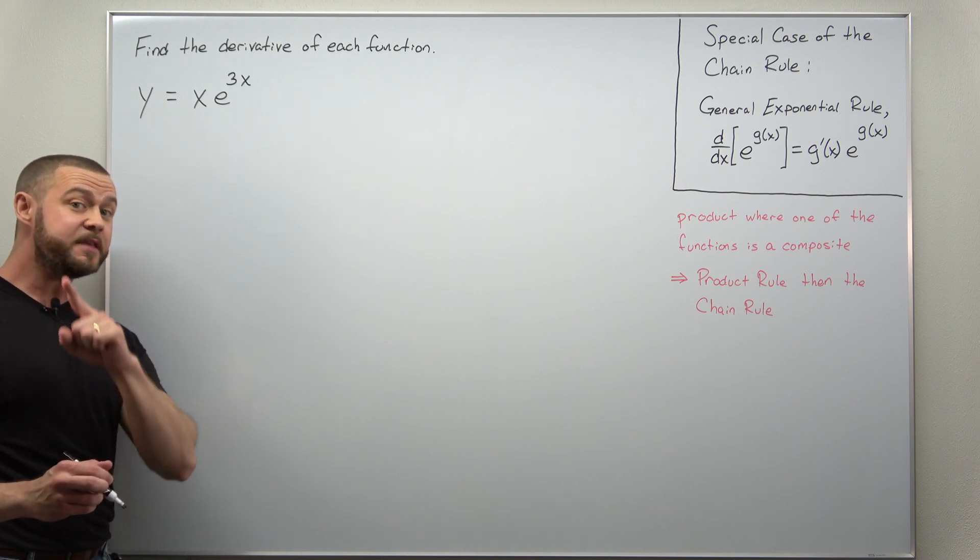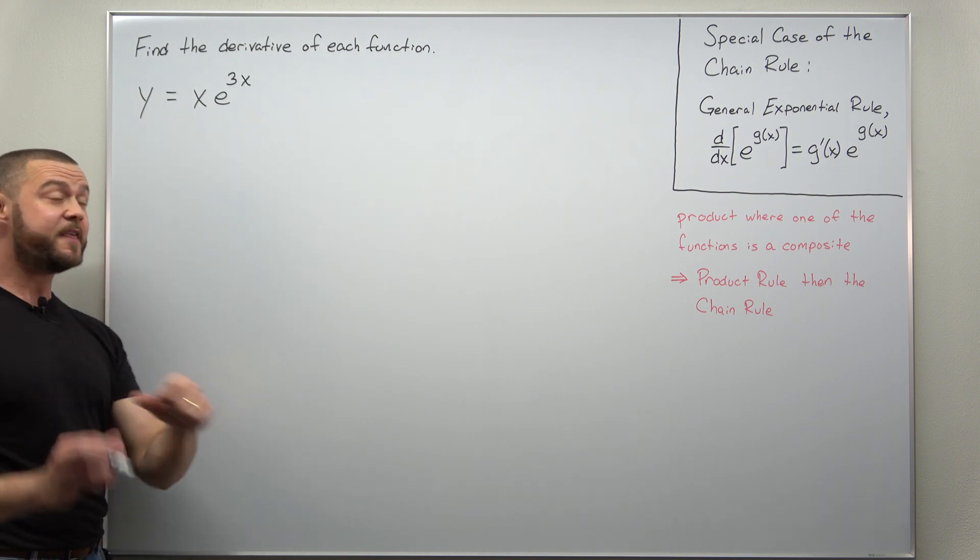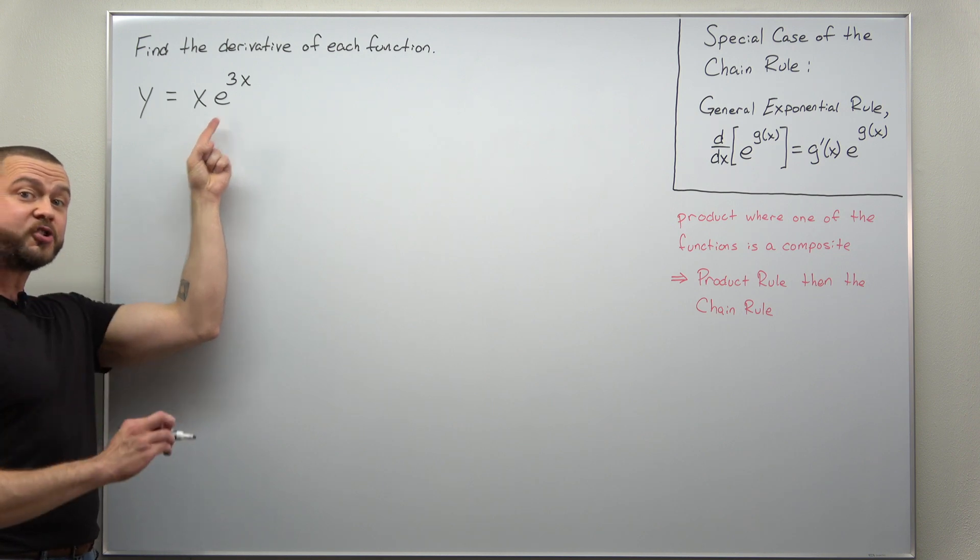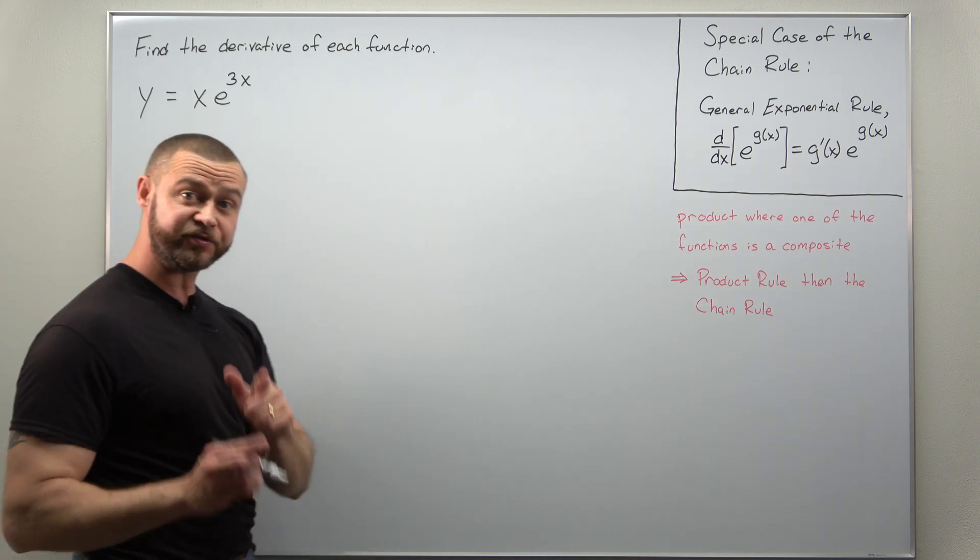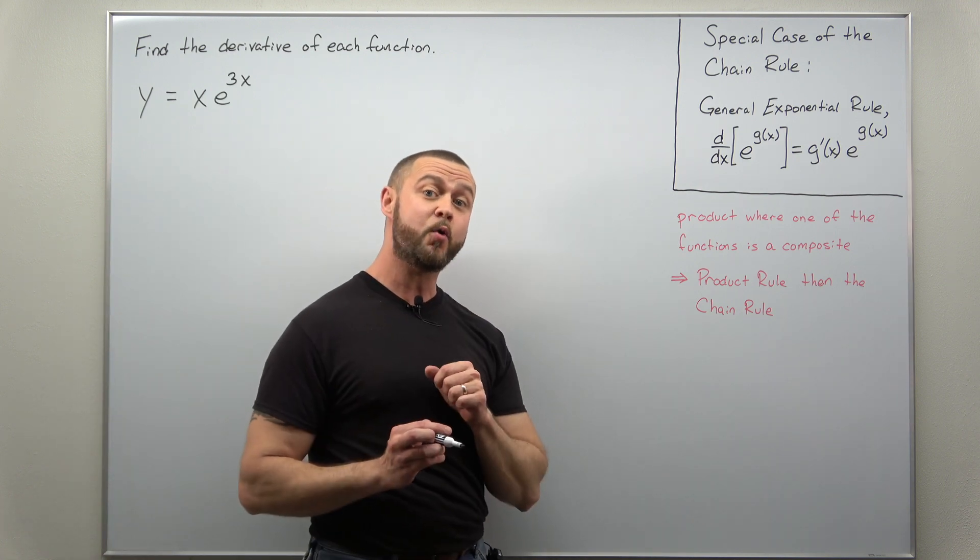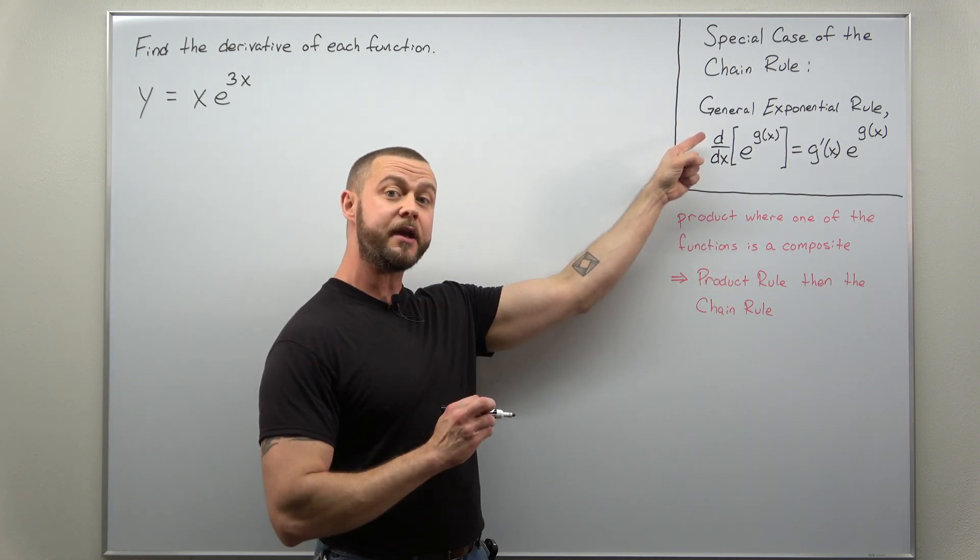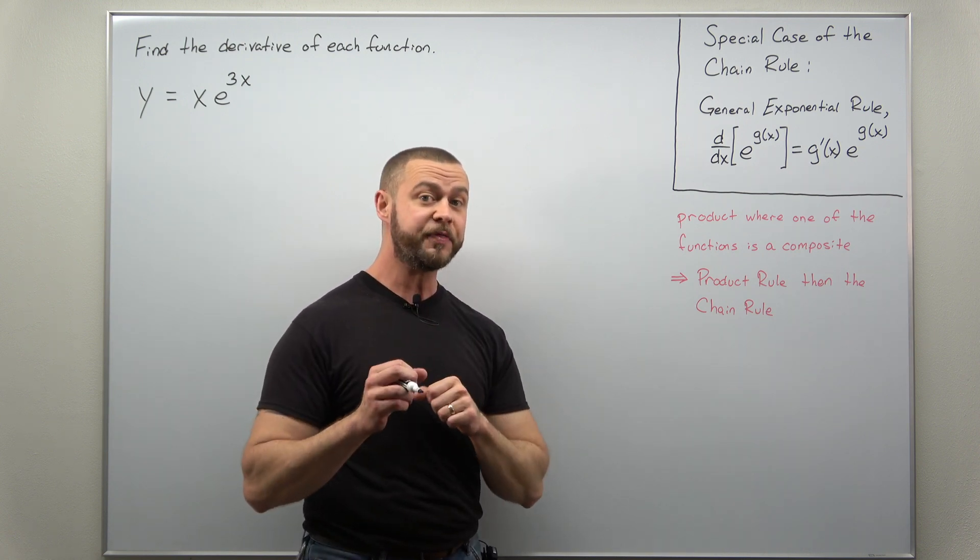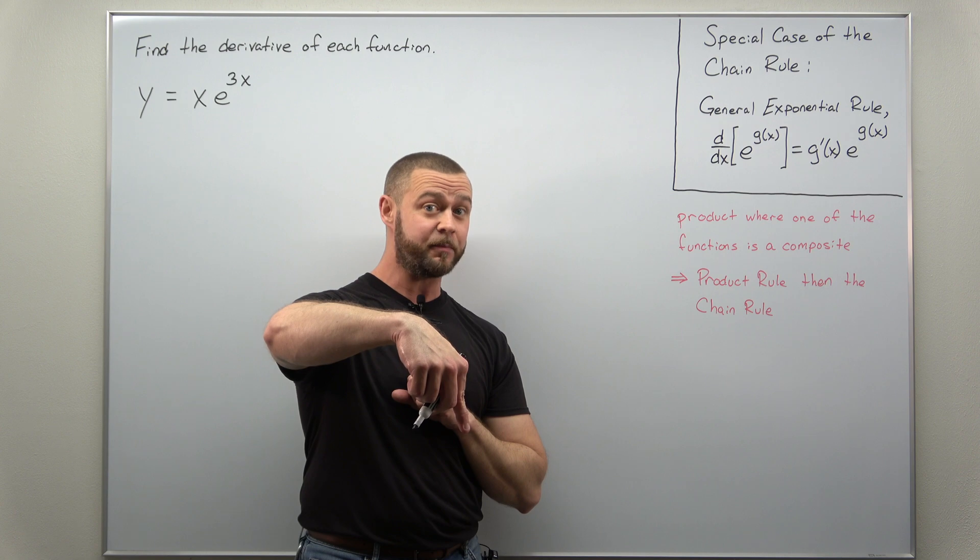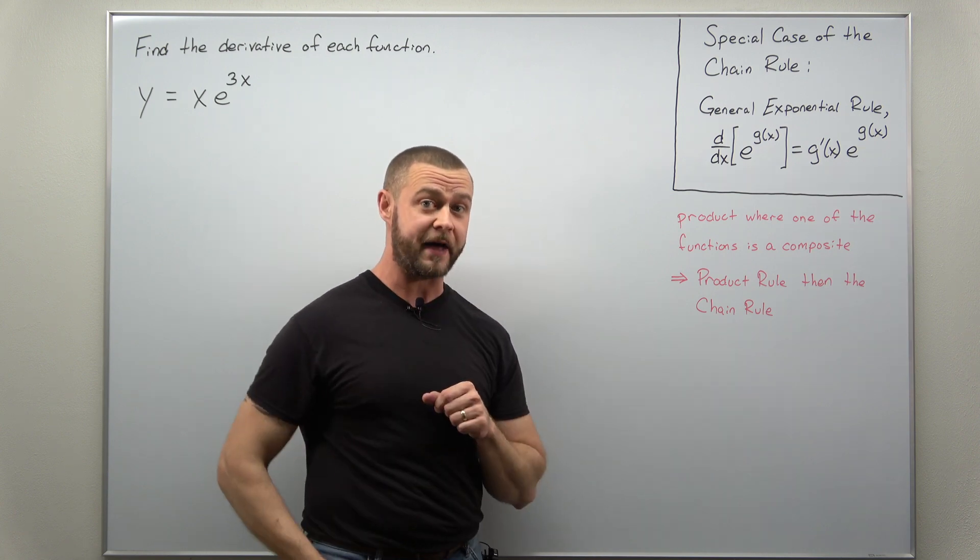We're going to be applying the product rule first, and then when we differentiate the second function, that's where we'll use the chain rule. You'll want to be familiar with some shortcuts to make this go as quickly as possible. We have this shortcut for the chain rule called the general exponential rule. If you're not familiar with that, check out the video I have linked below in the description.